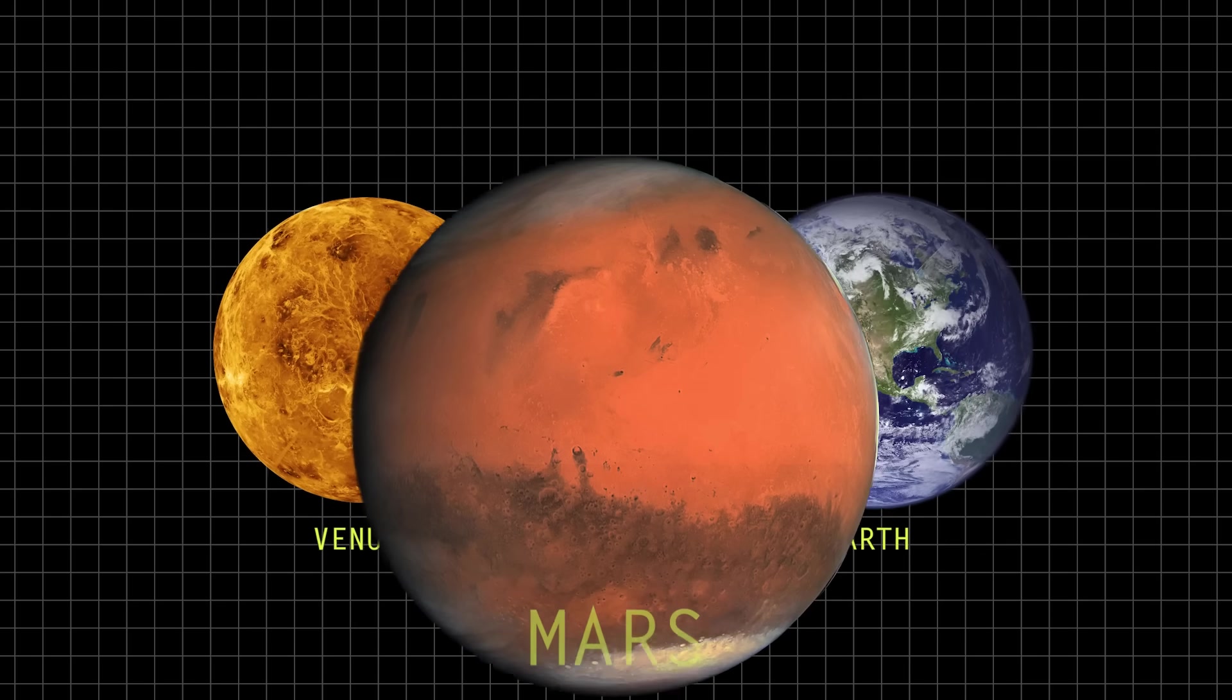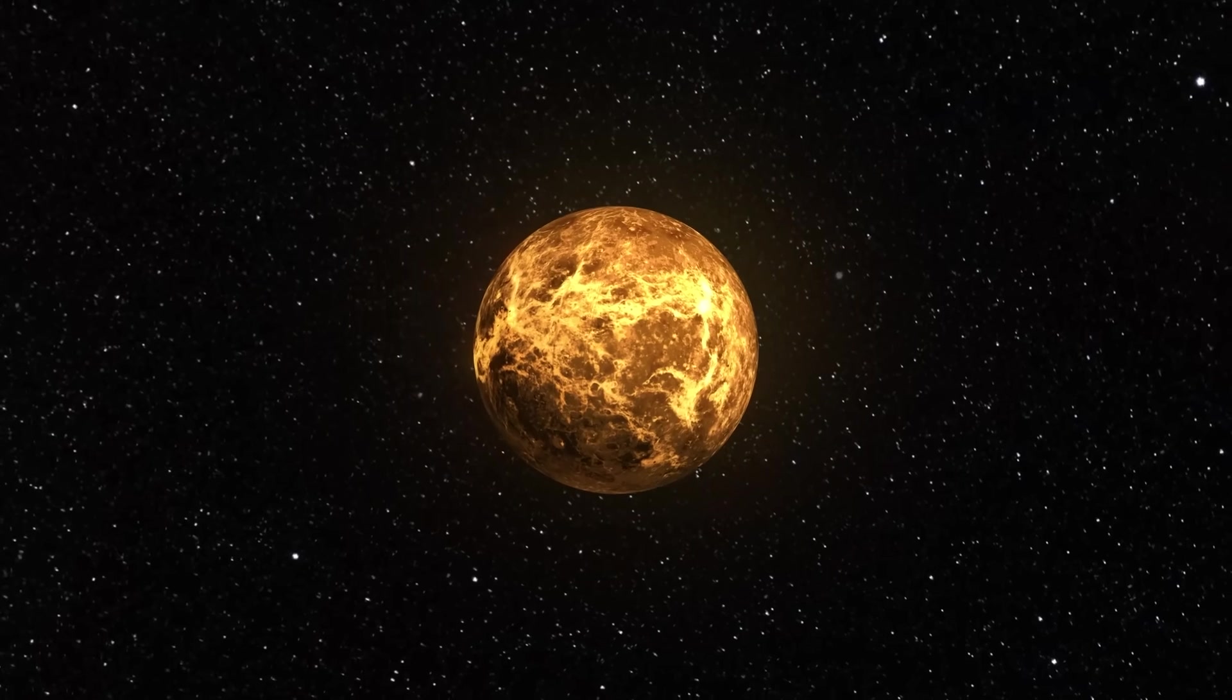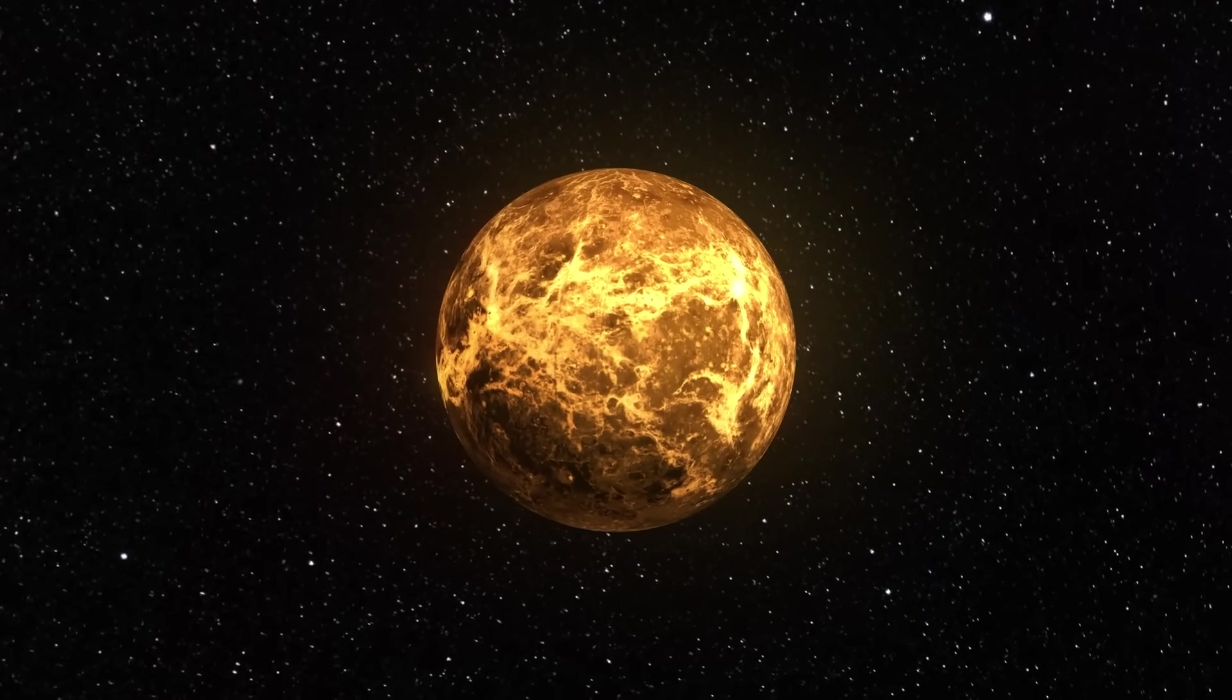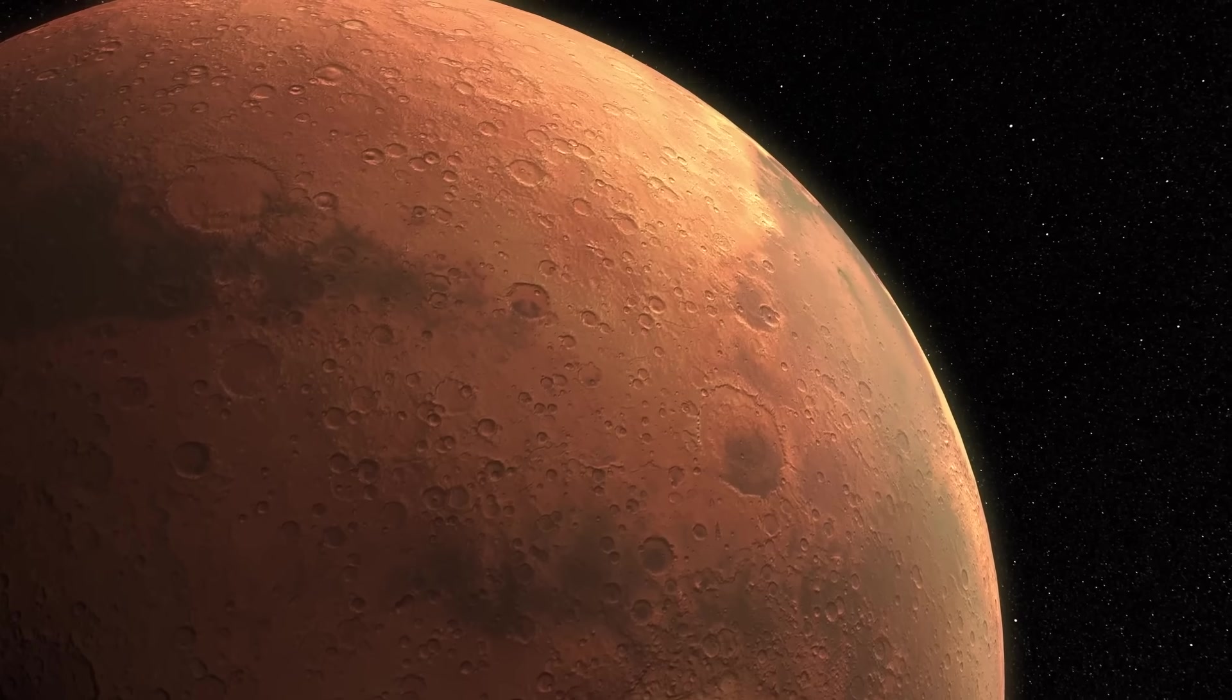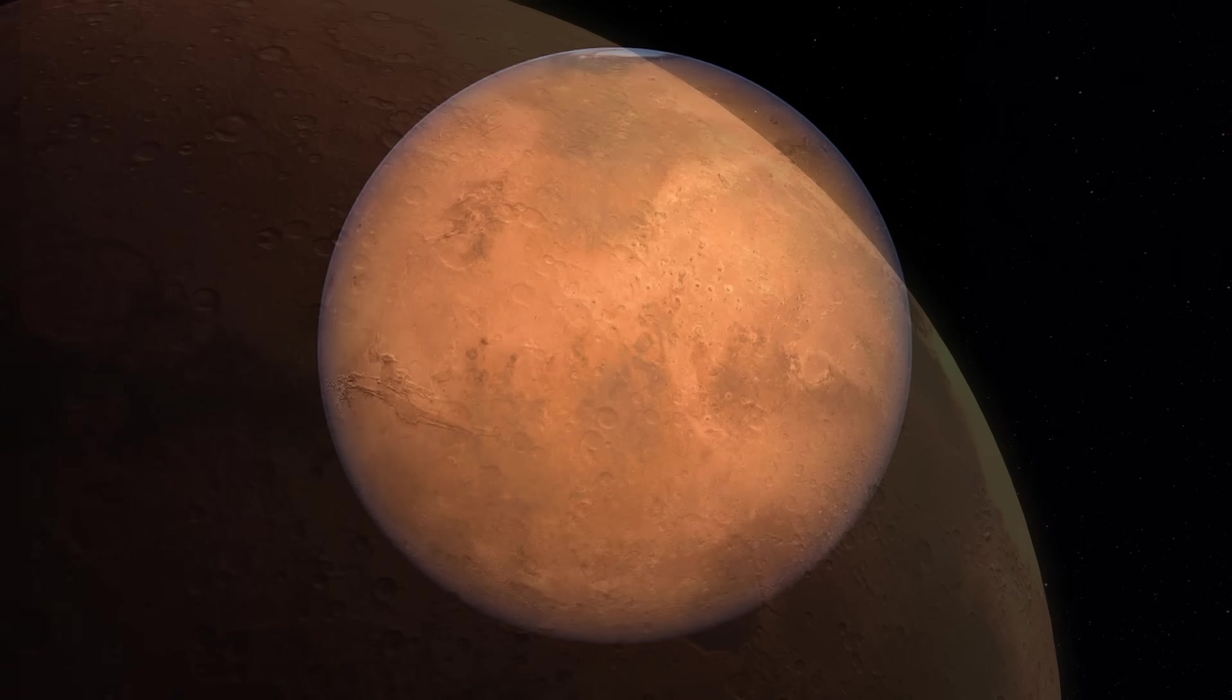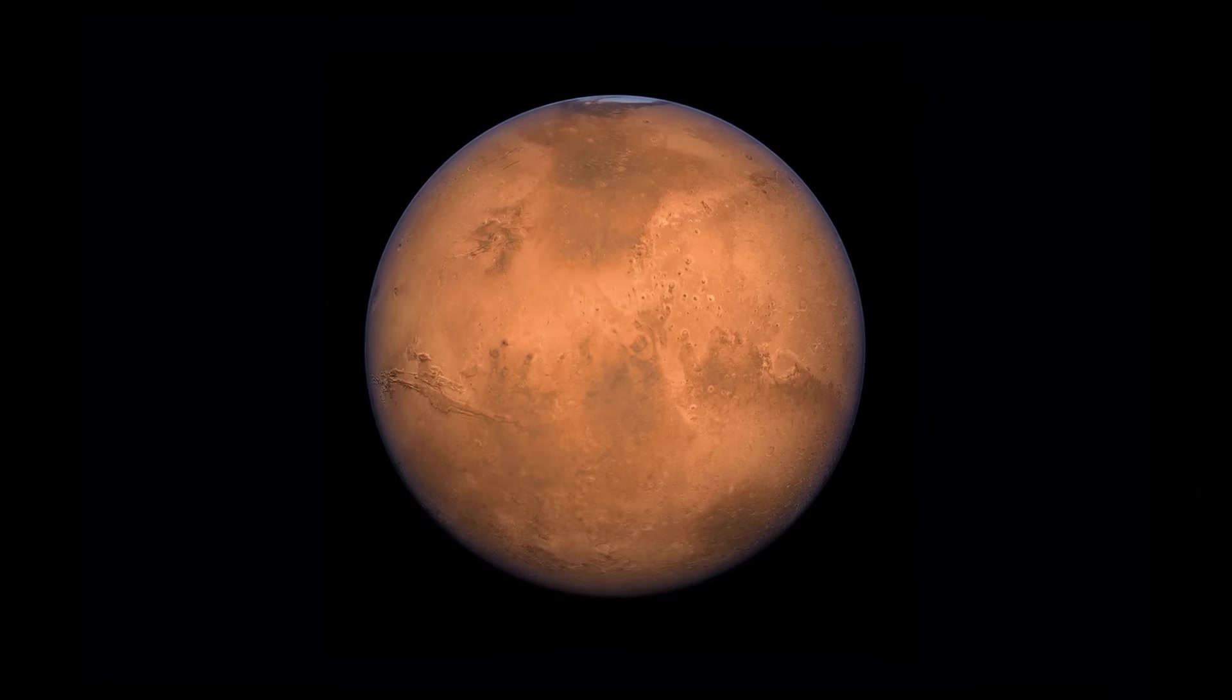While Mars tends to get all of the attention right now in the 21st century, back in the early days of the space race, there was actually much more interest in studying Venus. And that's mostly because we can easily observe the surface of Mars through high-powered telescopes on Earth. So we already had a pretty good idea that there wasn't a whole lot going on over there.